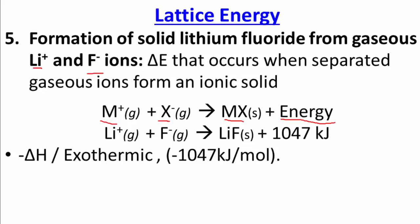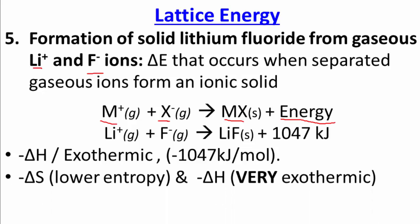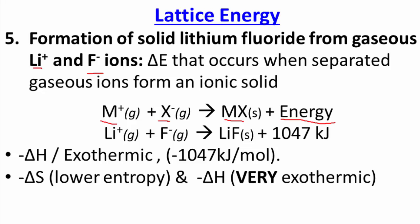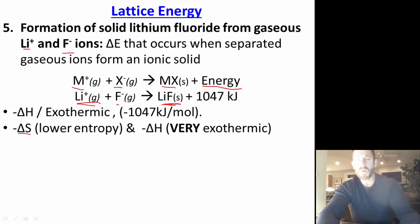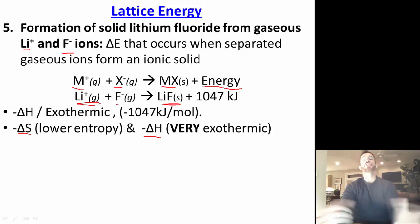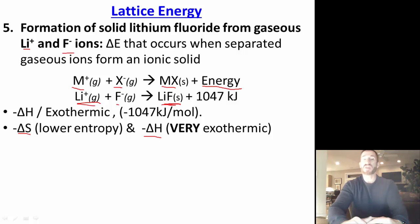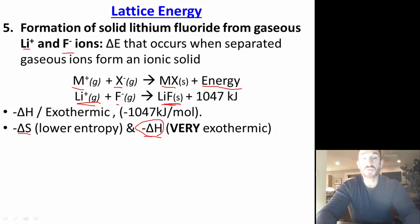This is an exothermic process. We're decreasing entropy a lot — going from gaseous ions of two different types to a very rigid solid. The delta S is actually negative. However, a negative delta H promotes a negative delta G, and this is a huge delta H — very exothermic. So this large negative delta H contributes to a negative delta G, making this process spontaneous despite the negative delta S.